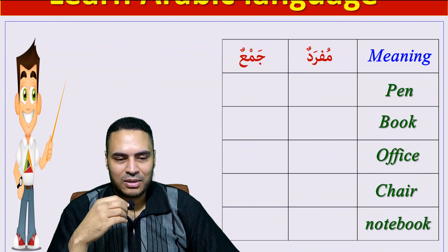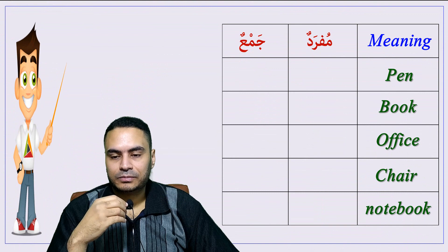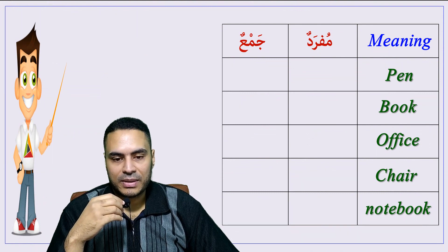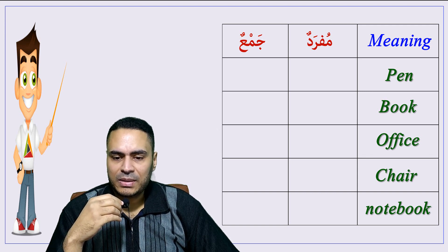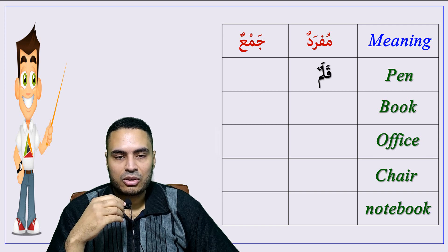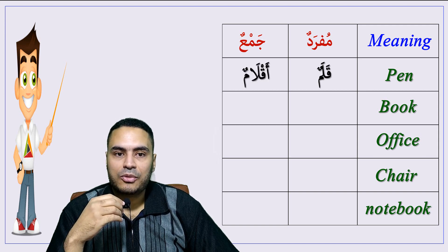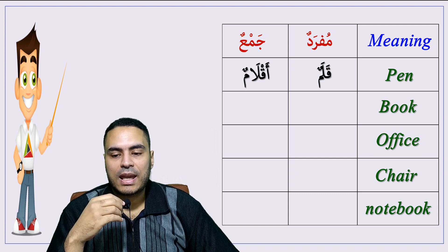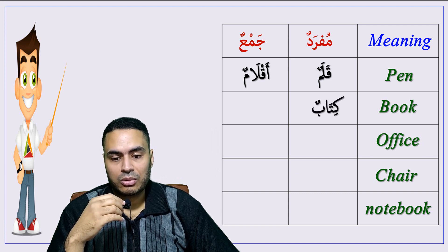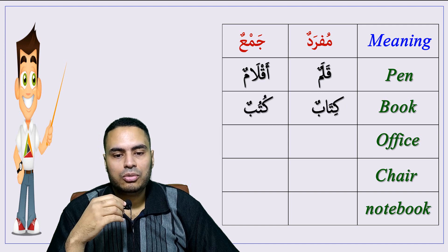Let's start our lesson today. Here we have: mufradun means singular, and jamʿu means plural. Let's start with pen — qalamon, plural: aqlam. Book — kitabun, plural: kutubun.